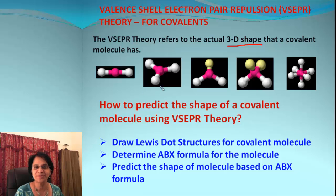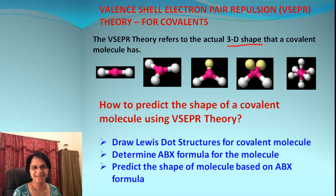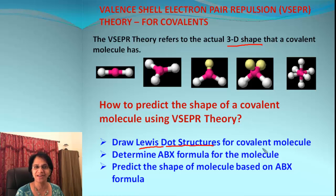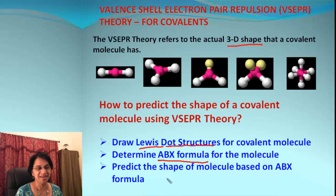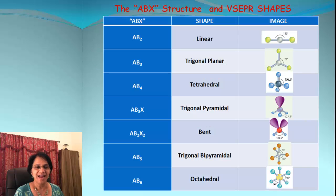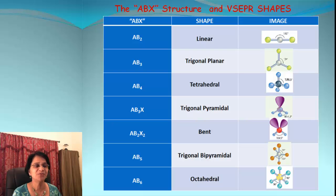These are examples of 3D shapes for different molecules. To predict the shape of a covalent molecule using VSEPR theory, there are three steps: number one, we draw the Lewis dot structure for the molecule; step two, we find out the ABX formula for the compound; and number three, we predict the shape based upon the ABX formula.